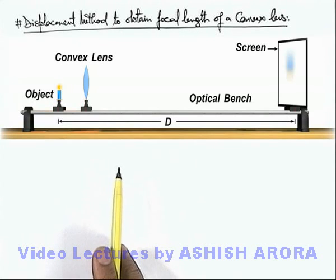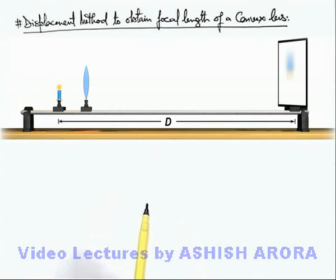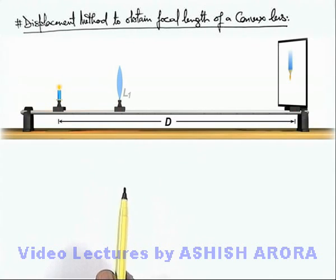As we know, to obtain a real image on screen, the separation D must be greater than 4 times the focal length of the lens. So here if lens is displaced and placed at a position where a sharp image is obtained on screen, then here we can see if object distance from lens is u and image distance is v in magnitude.